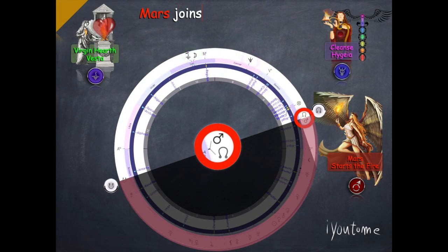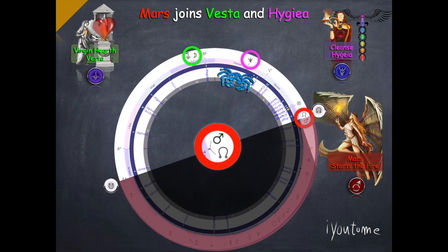Mars joins Vesta and Hygieia, who have been and continue to control the chart. Hygieia, goddess of cleanses, is cleansing your magnetic field, which is the sign of Cancer. She just came out of retrograde on March 22nd, meaning you were learning and now you're going to vibe what you've learned.